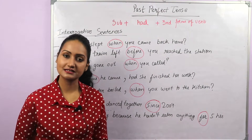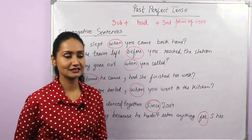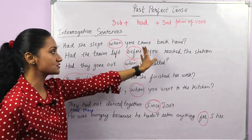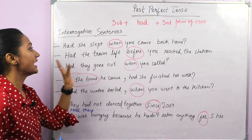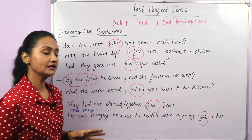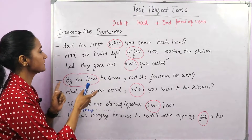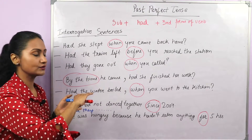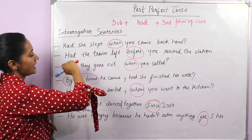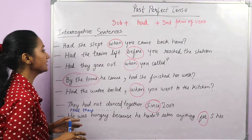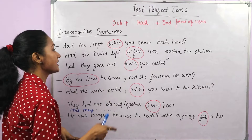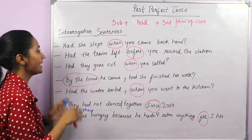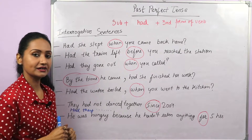Let's make some interrogative sentences in past perfect tense. 'Had she slept when you came back home?' An action happened in the past — 'when you came back home' — and before that, 'had she slept?' Here we swapped the places of the subject and the helping verb: 'she' takes the second position and 'had' takes the first position. For a negative question: 'Had she not slept?' or 'Hadn't she slept?'